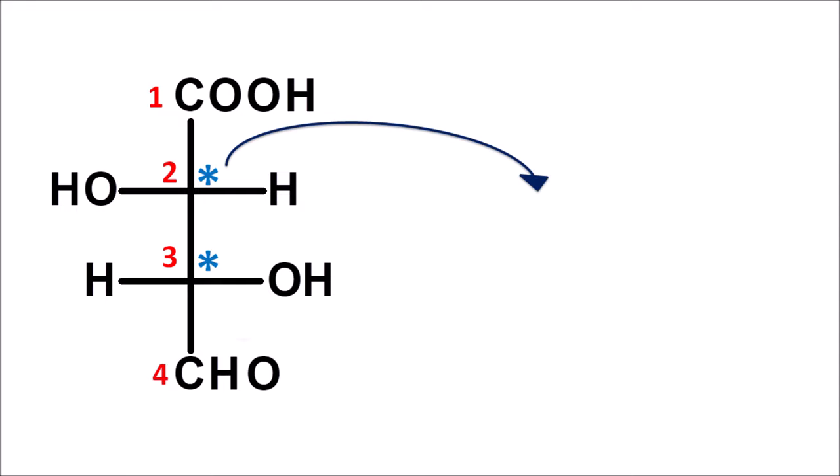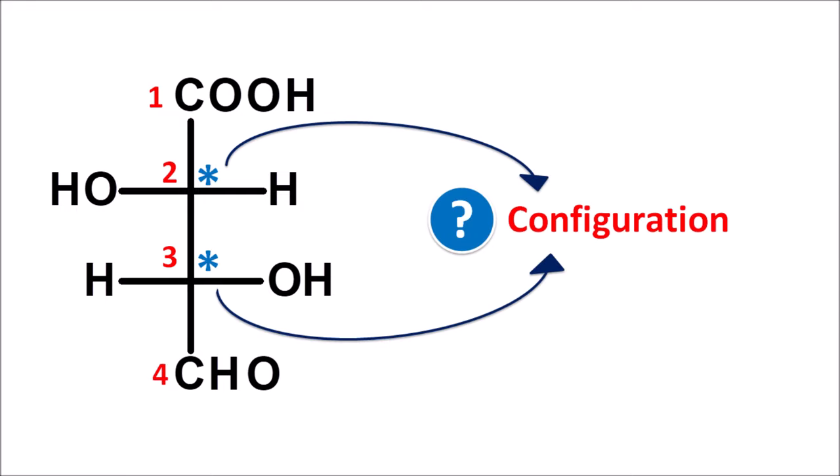Then what is the configuration at C2 as well as C3? In order to assign the configuration, we can use the R and S nomenclature by using sequence rules. In our previous video, we have discussed about the sequence rules and how to assign R and S configuration for simple compounds. And today in this video, we are going to discuss compounds with two asymmetric centers and how we can assign R and S configuration.